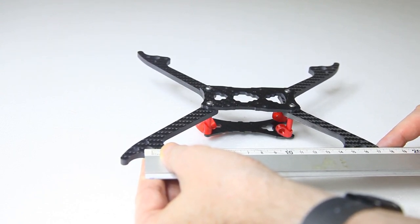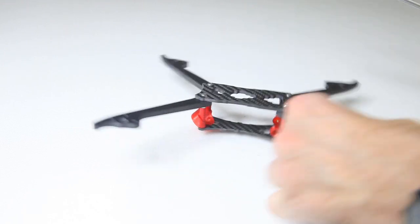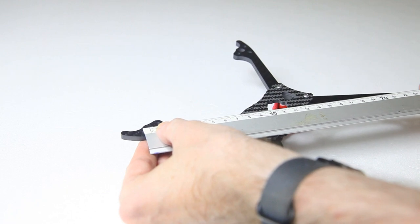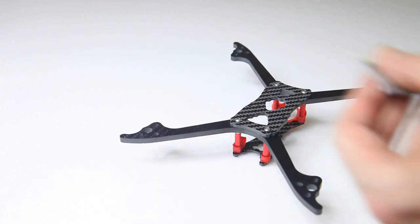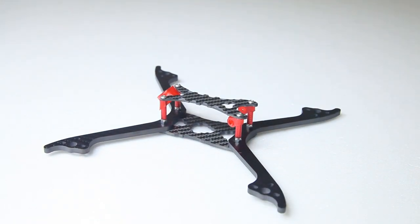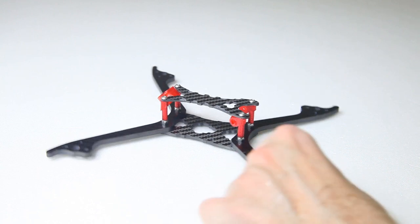15.7 cm. So again at the rear it's a wider frame. And front to back it's 16 cm. And wheelbase is exactly 22 cm.